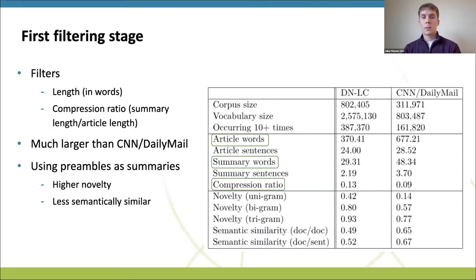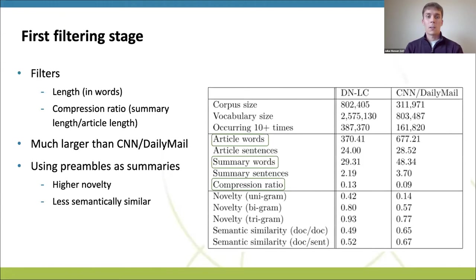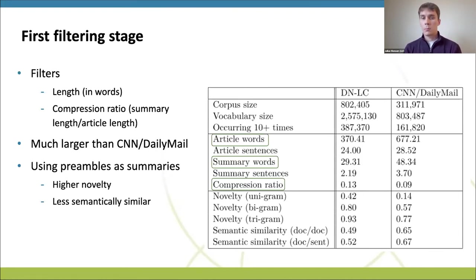We filtered the original corpus in two stages. First, we filtered based on article and summary length: articles shorter than 25 words and summaries shorter than 10 words were removed. We also filtered on compression ratio, which is the summary length divided by article length. This initial filtering and removal of duplicates gave us a corpus of about 800,000 examples, which we call the TNLC corpus. The TNLC has much higher novelty, which is the measure of abstractness in the summary, and contains less semantically similar articles and summaries, indicating a problem of low quality data.